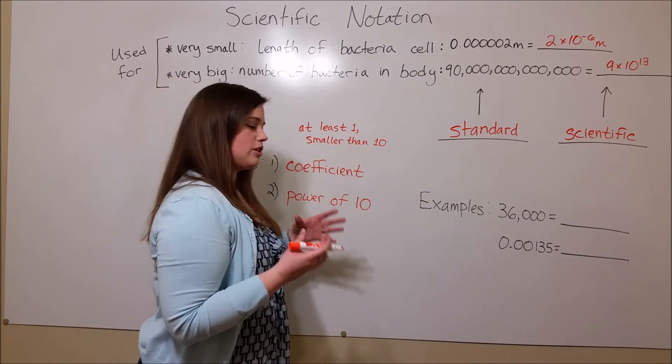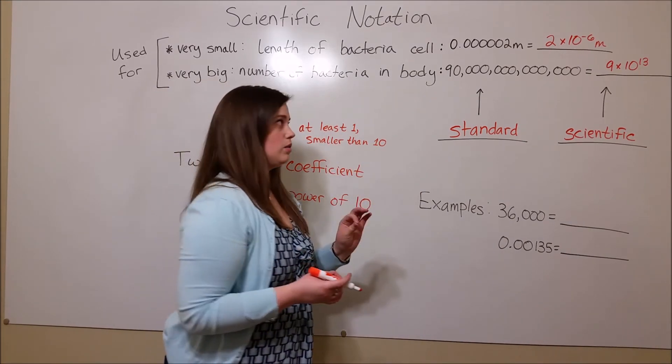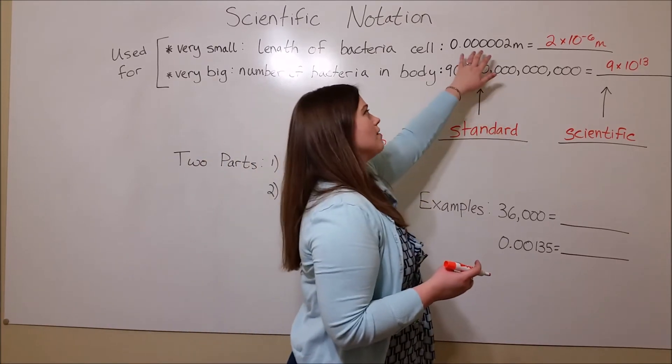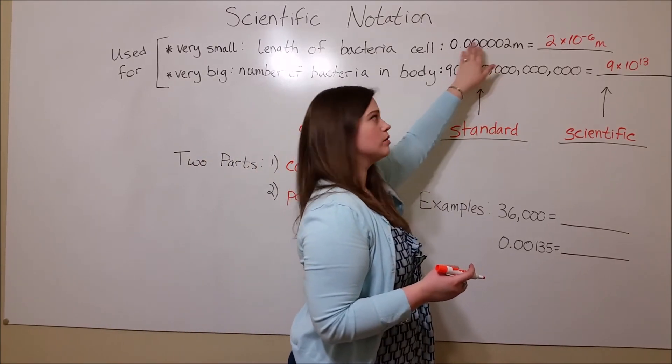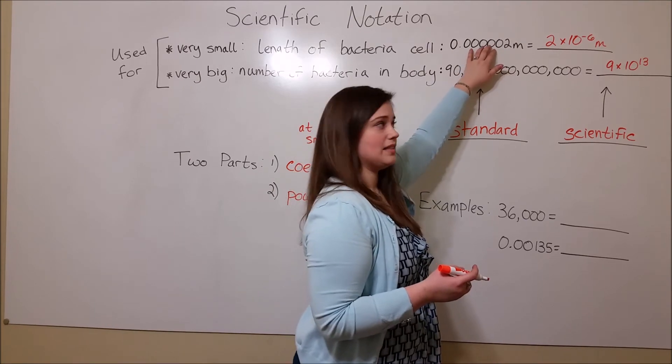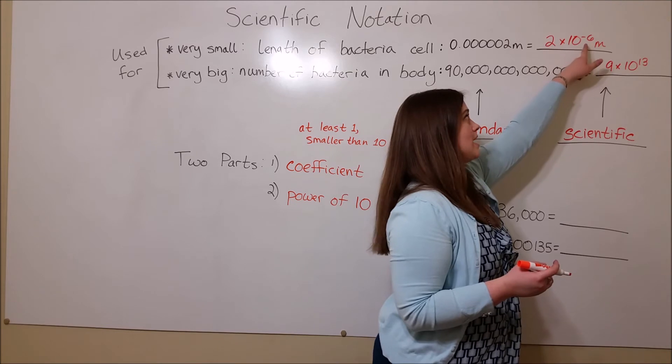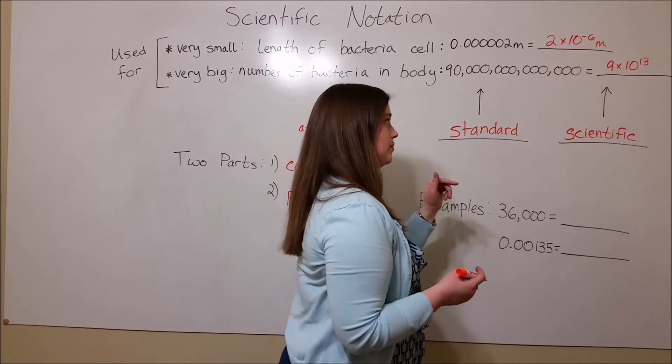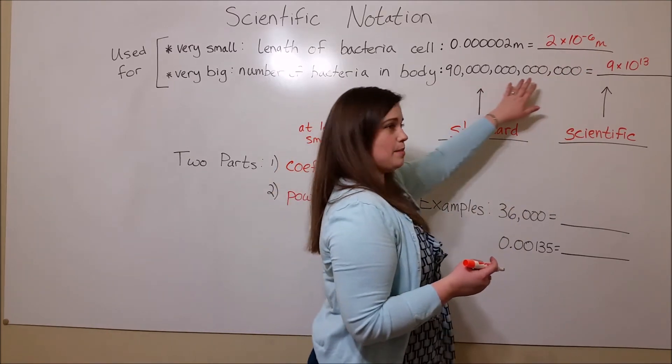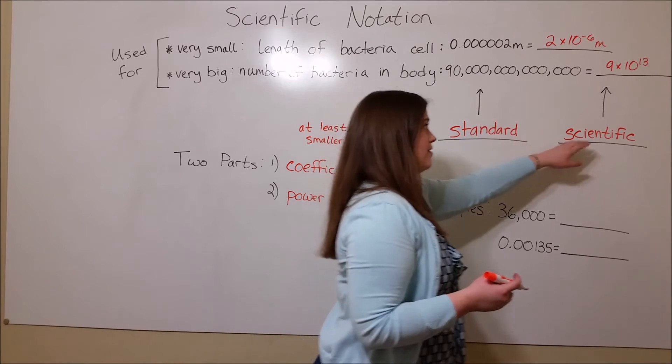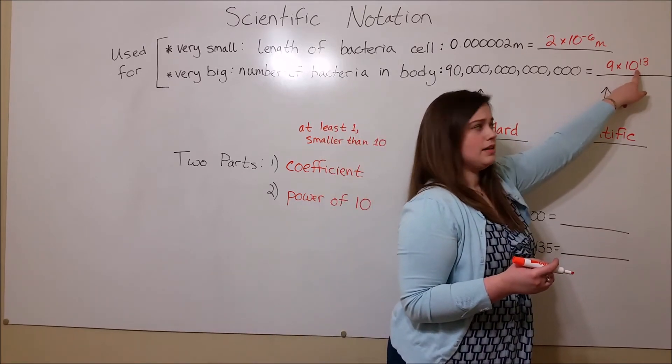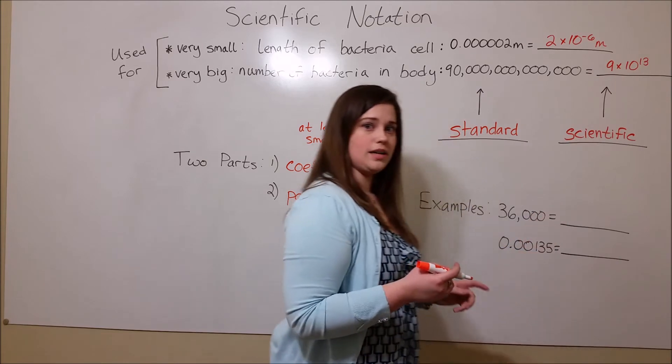And important to make sure that you get the sign correct. Whenever you have a very small number, so the standard notation that is less than 1, you're going to have a negative exponent, so the negative 6 on the power of 10. Whenever you have a very big number, that exponent is going to be a positive number. So here the 13 is positive.